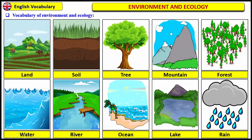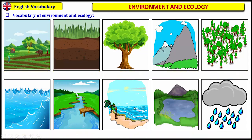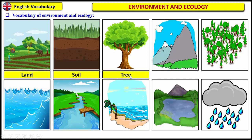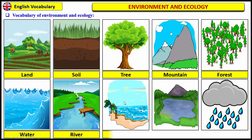So, do you remember these words? Pause the video and try to read the pictures without looking at the words. The first one is land, soil, tree, mountain, forest, water, river, ocean, lake, and rain.